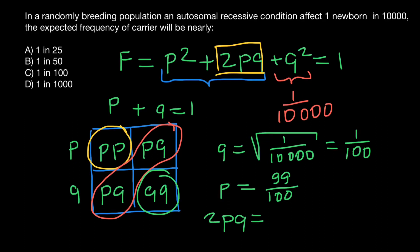...would be 2 multiplied by the frequency of P, which is 99 over 100, and multiplied by the frequency of Q, which is one hundredth.